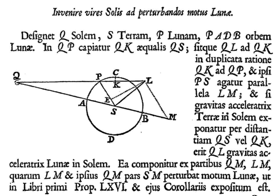The history can be considered to fall into three parts: from ancient times to Newton, the period of classical physics, and modern developments.